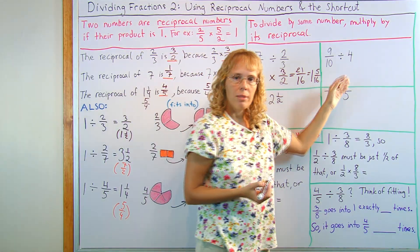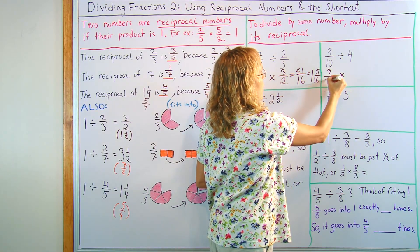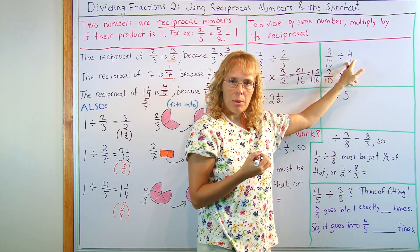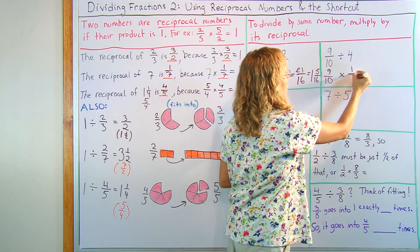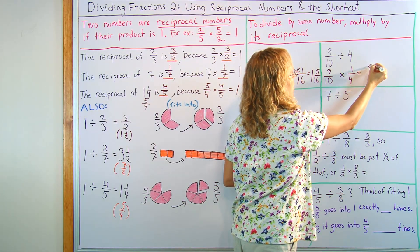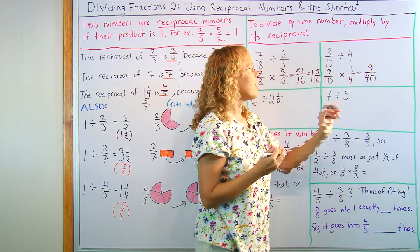Nine-tenths divided by four, the same thing. We change it to a multiplication problem. Nine-tenths doesn't change. We're going to multiply it by the reciprocal of this number. And the reciprocal of four is one-fourth. There, and now we go nine times one, nine, and ten times four, forty. And that doesn't simplify anything.